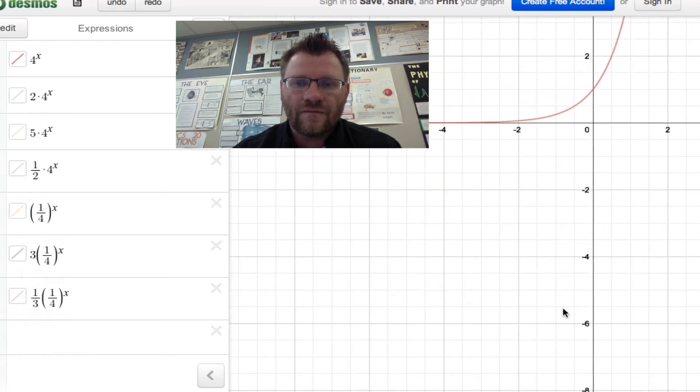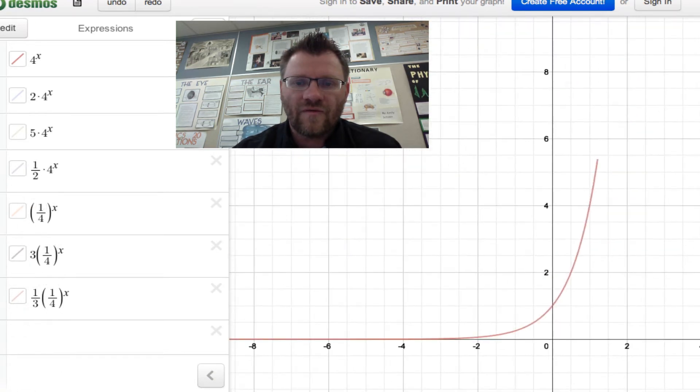In terms of a y-intercept, it happens to be at 0,1. And remember to find your y-intercept, you just let x equal 0. So if I let x equal 0, I get 4 to the power of 0, and anything raised to the power of 0 is 1.